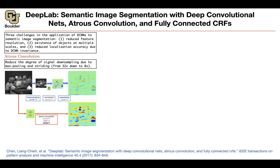Rather than doing that, you can do atrous convolutions. Atrous is a French word and it means holes. You introduce holes inside your kernel, which gives you a kernel twice the size of the original one. Now you can do a regular convolution with your image using that larger kernel size. The rate is 2 because we introduced a zero between every two pixels of our kernel. The stride is still 1 and you don't need to do downsampling anymore, and you end up with a better-looking feature map.